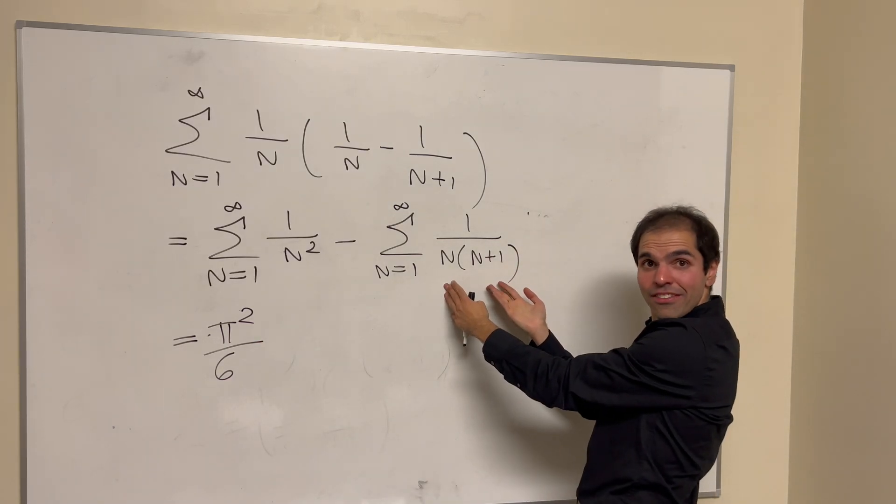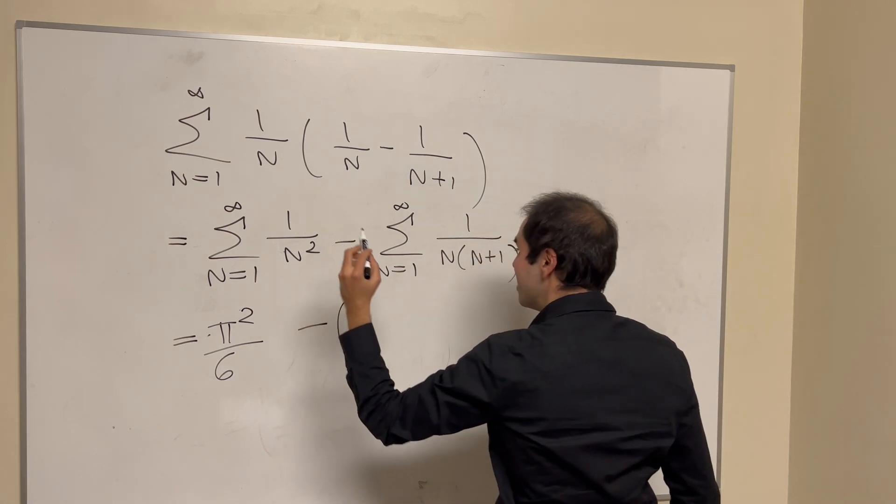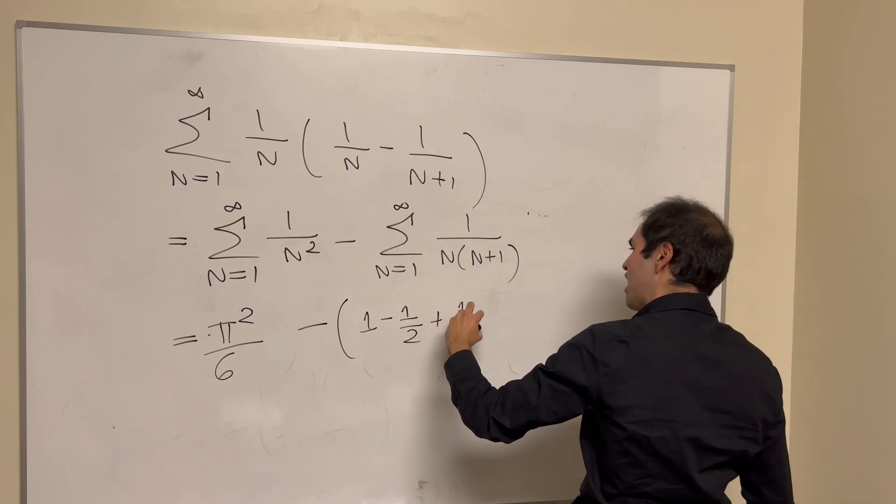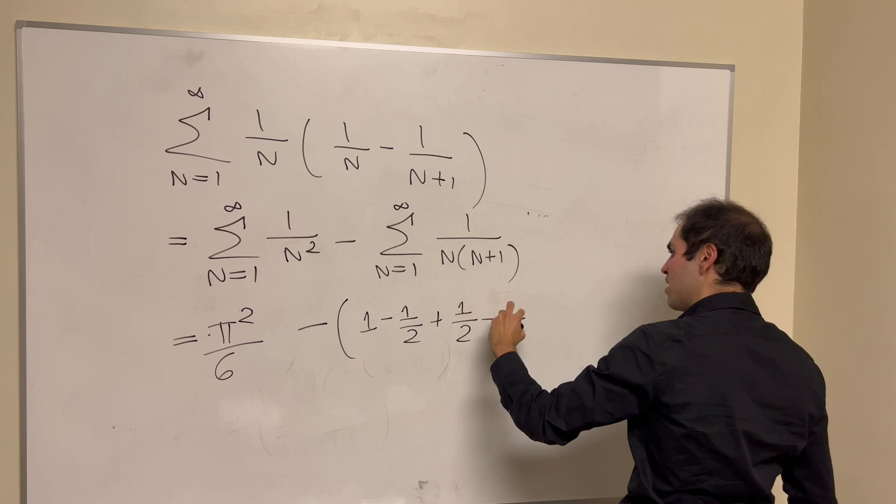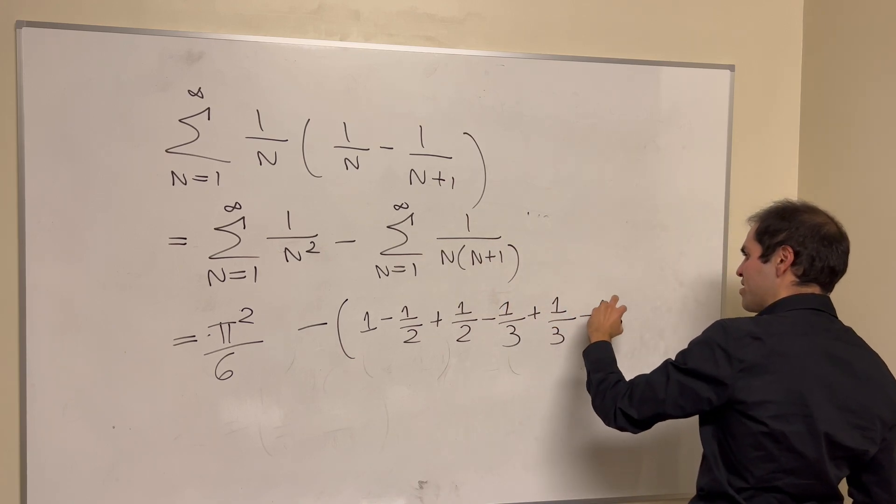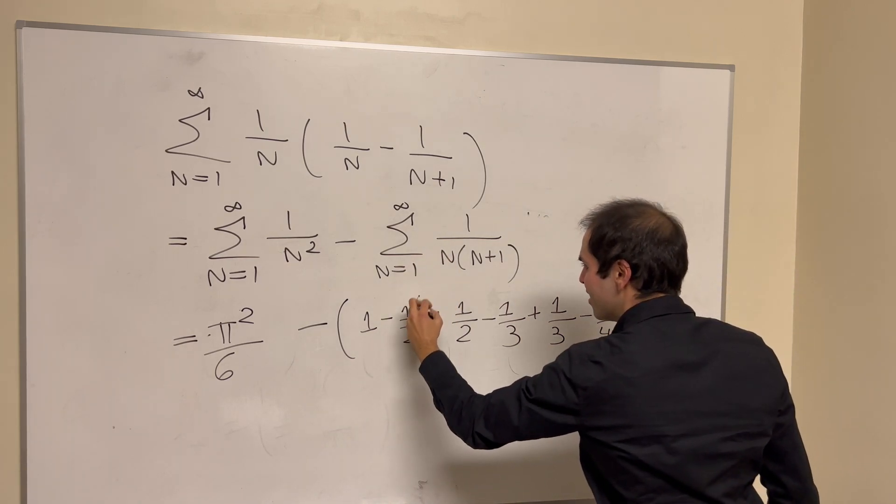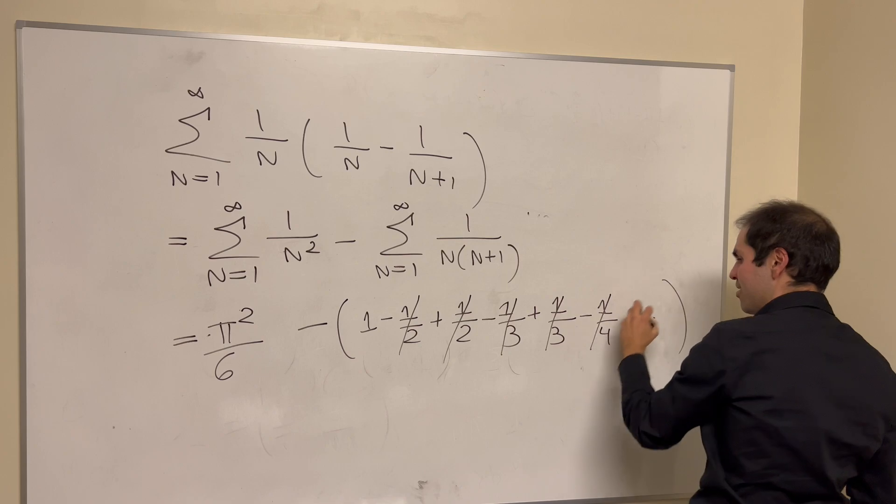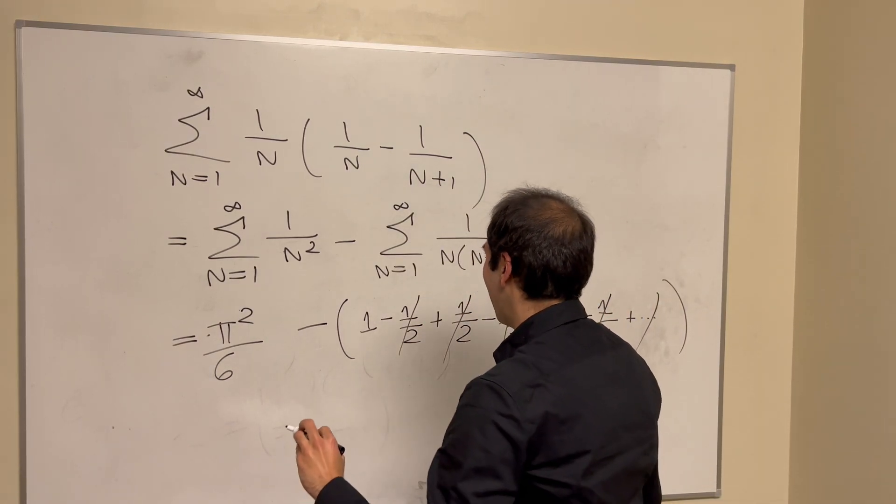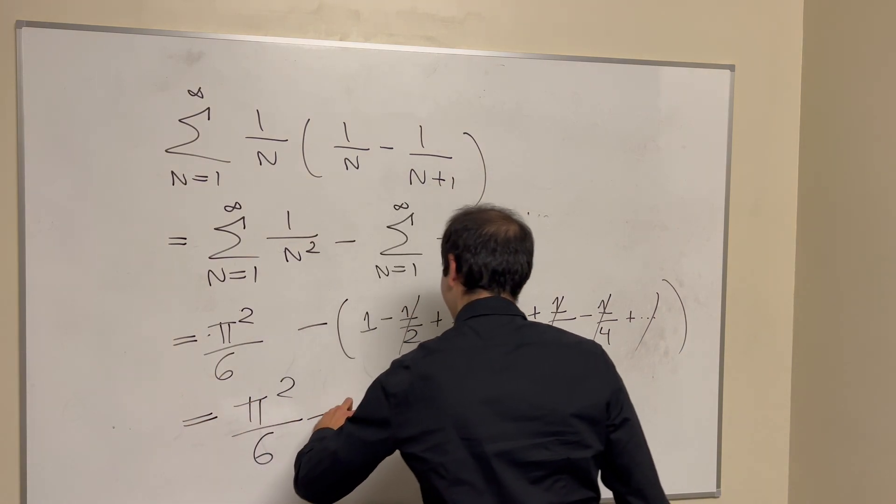And this one you may have seen from calculus. It's this famous telescoping sum. So 1 minus 1 half plus 1 half minus 1 third plus 1 third minus 1 quarter, etc. And then this one, all those terms cancel out except for 1. And then this equals pi squared over 6 minus 1.